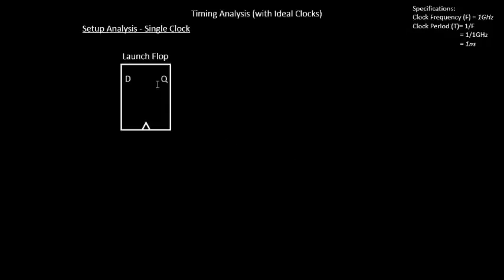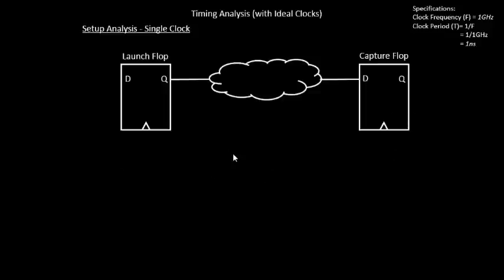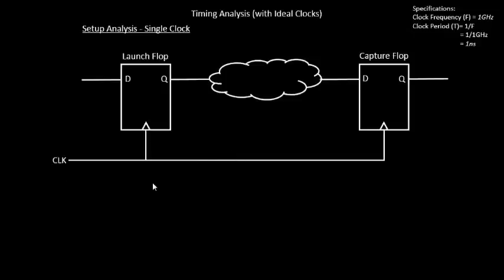It's also a single clock scenario. There are scenarios where your launch flop is triggered by one clock and your capture flop by another, but let's focus on the basic and simple scenario of a single clock. The clock frequency is given as 1 GHz, so the clock period is 1 nanosecond. We have the launch flop, the capture flop, the combinational logic between them, and the ideal clock network — meaning the clock tree is not yet built.